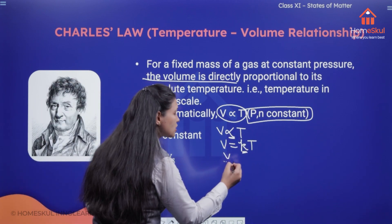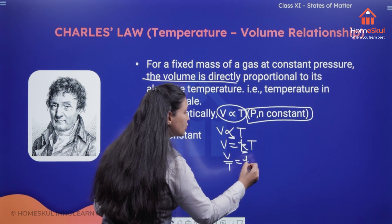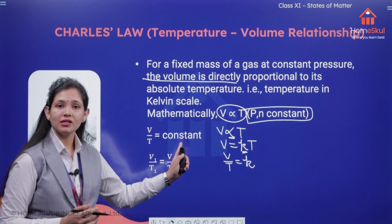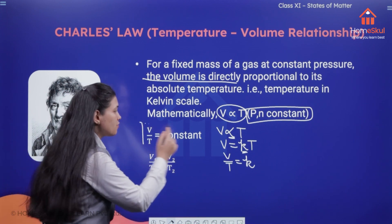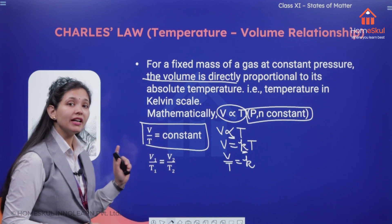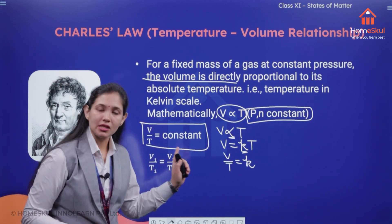And we can write it as V by T is equal to K here and this K is going to be the constant. So this relation for Charles law is very important, that is V by T is going to be constant.